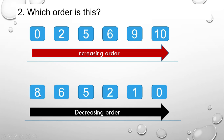Then from 8, 6, 5, 2, 1, and 0 — 8 is big, then we go down to 0 which is small, so we call this the decreasing order.